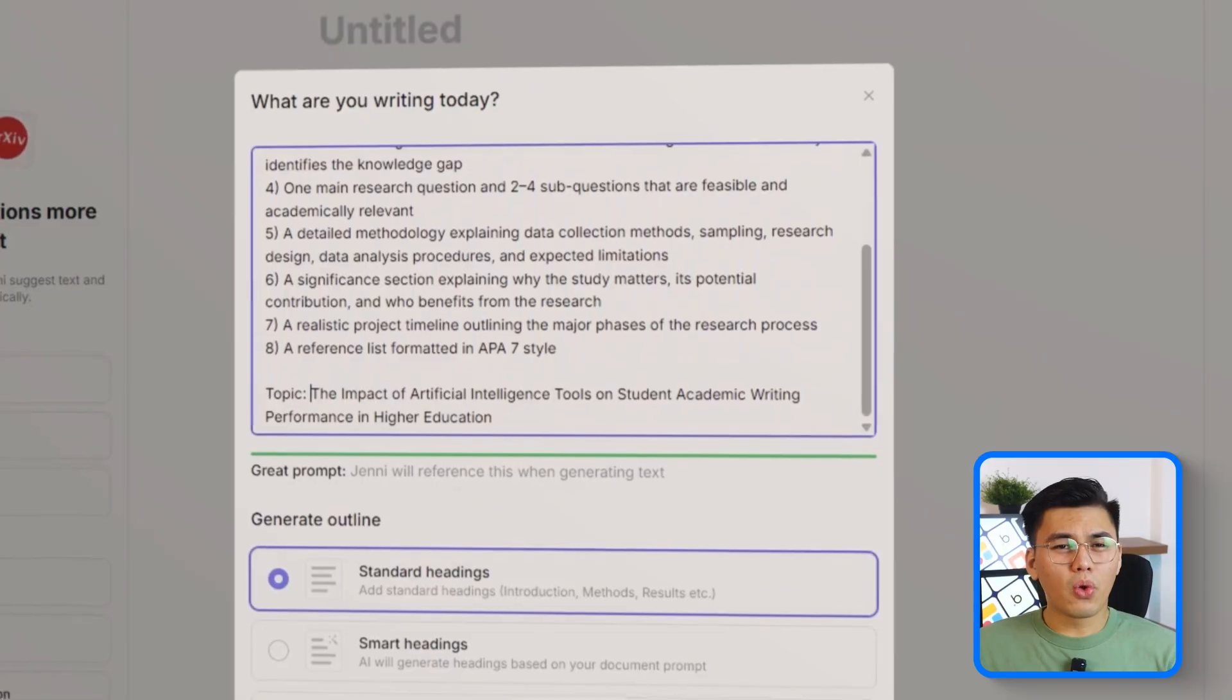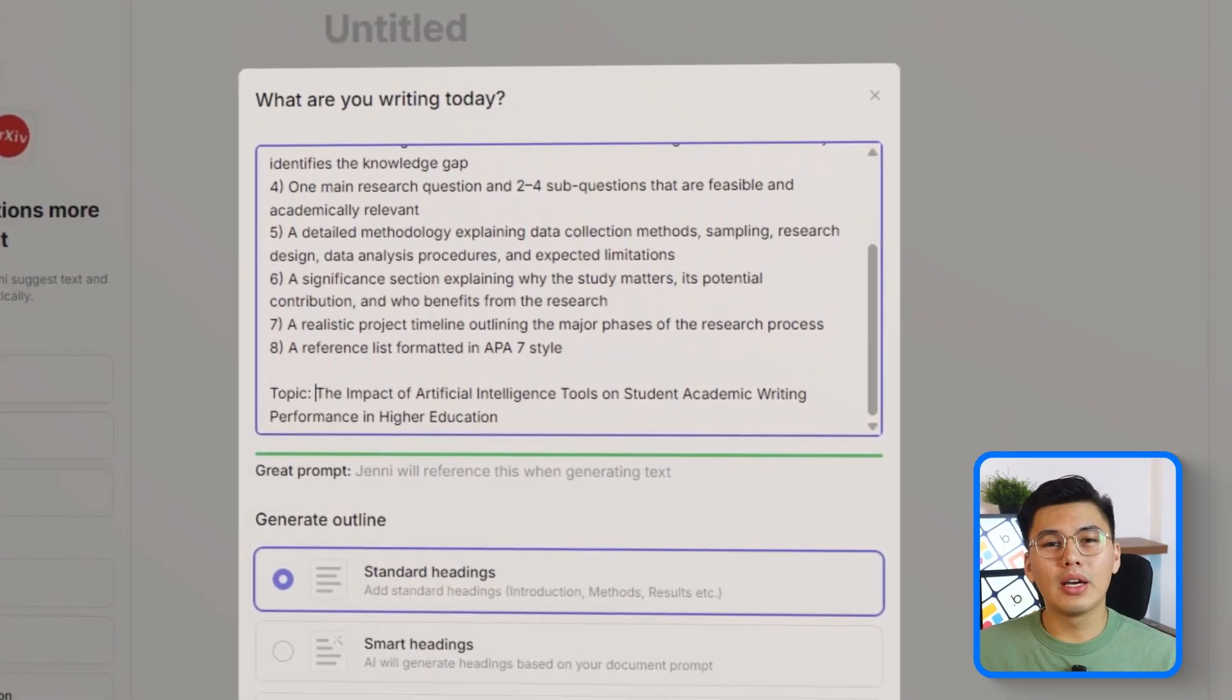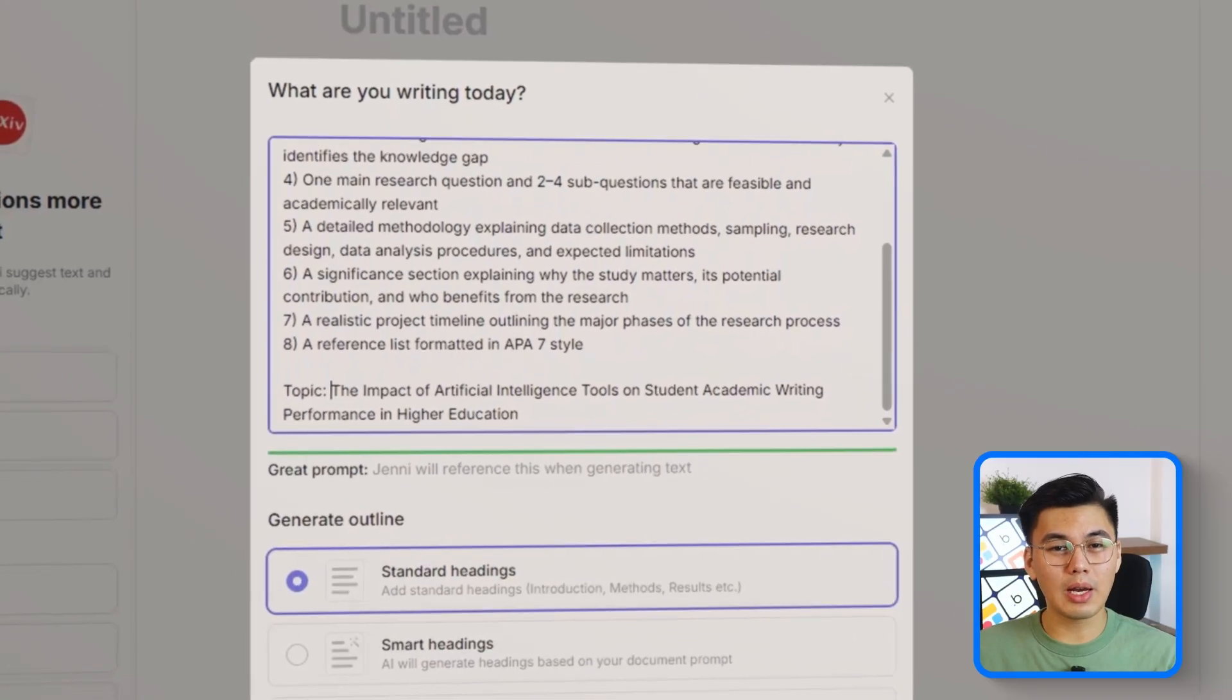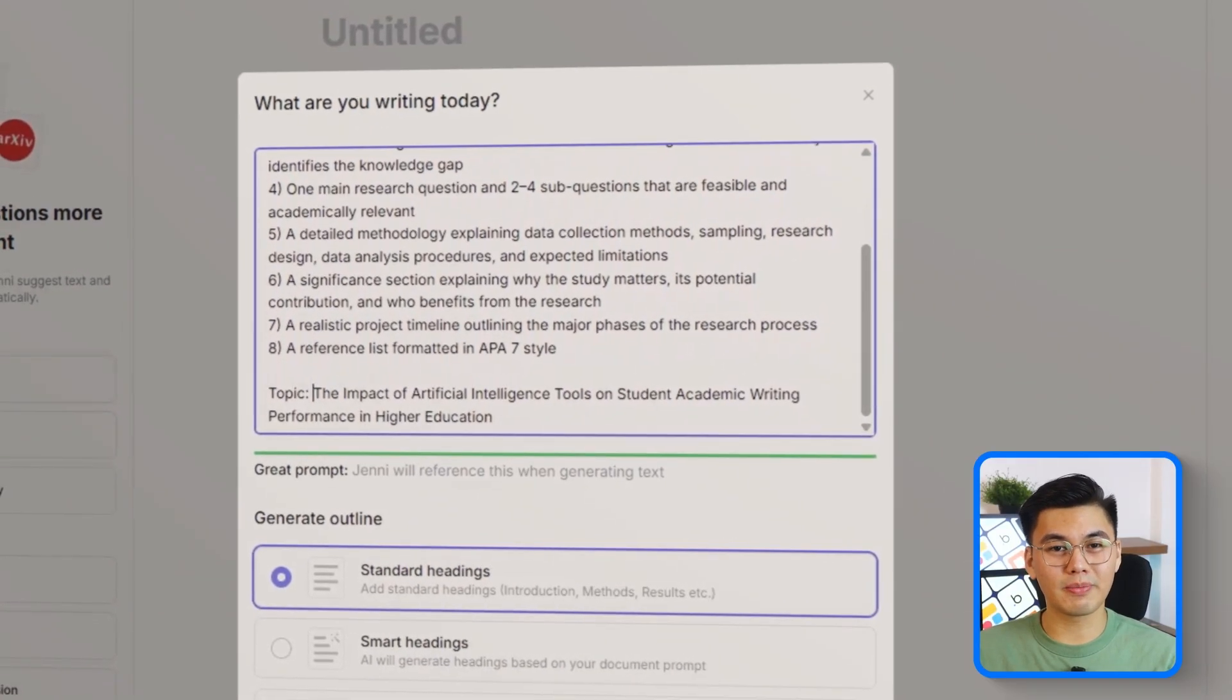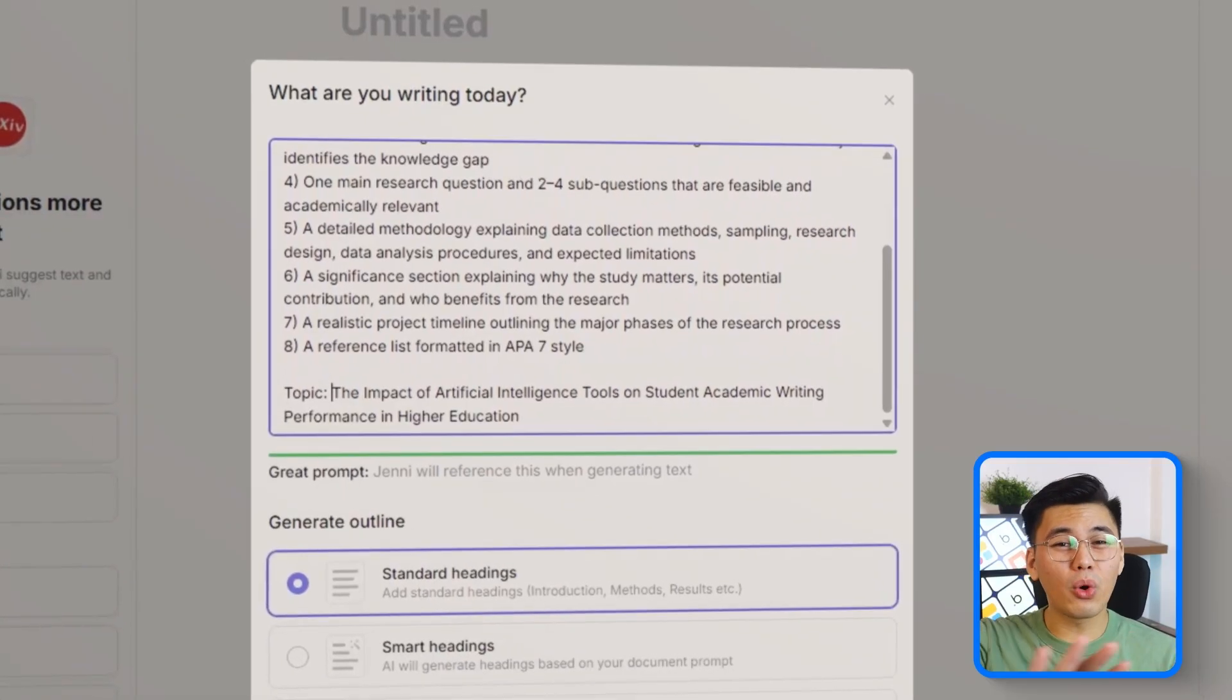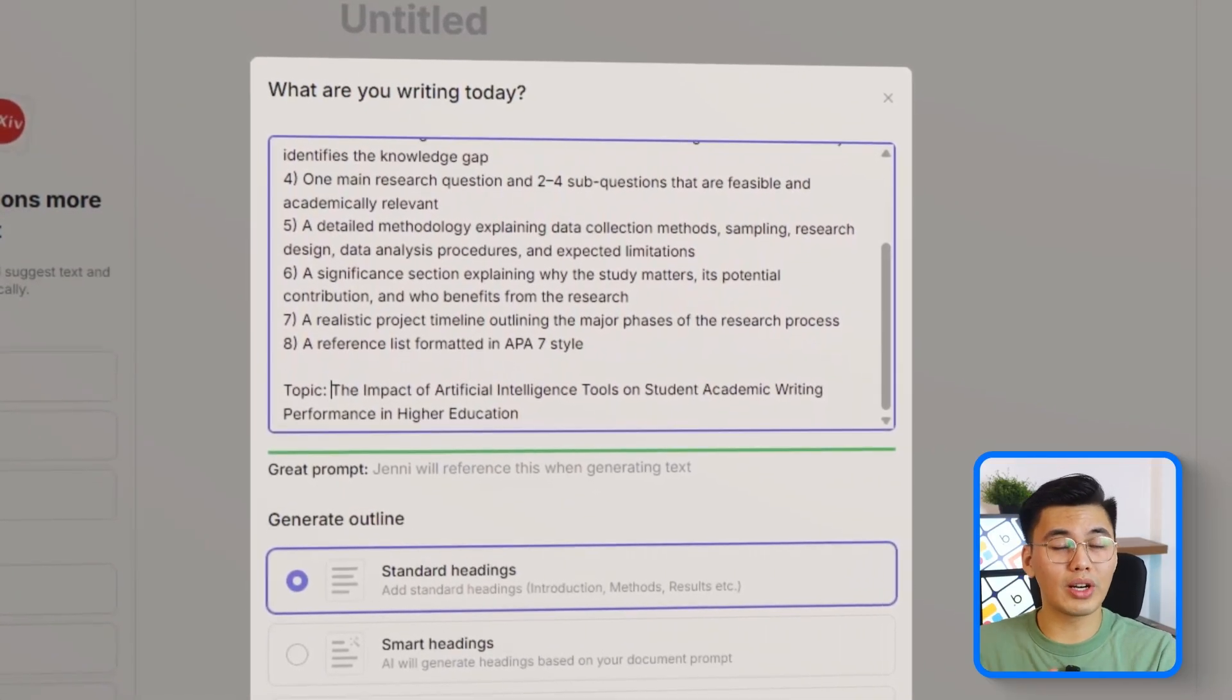And eight, a reference list formatted in APA 7 style. Topic: the impact of artificial intelligence tools on student academic writing performance in higher education.